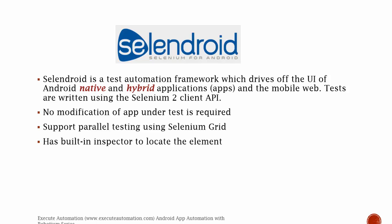The next tool is Selendroid. Selendroid is a test automation framework which drives the UI of Android's native and hybrid applications. It also supports the mobile web. Tests are written using the Selenium 2 client API, so Selendroid fully uses the Selenium 2 client API — that's why it's named Selenium and Android as Selendroid. Someone with strong Selenium knowledge can easily learn this tool.